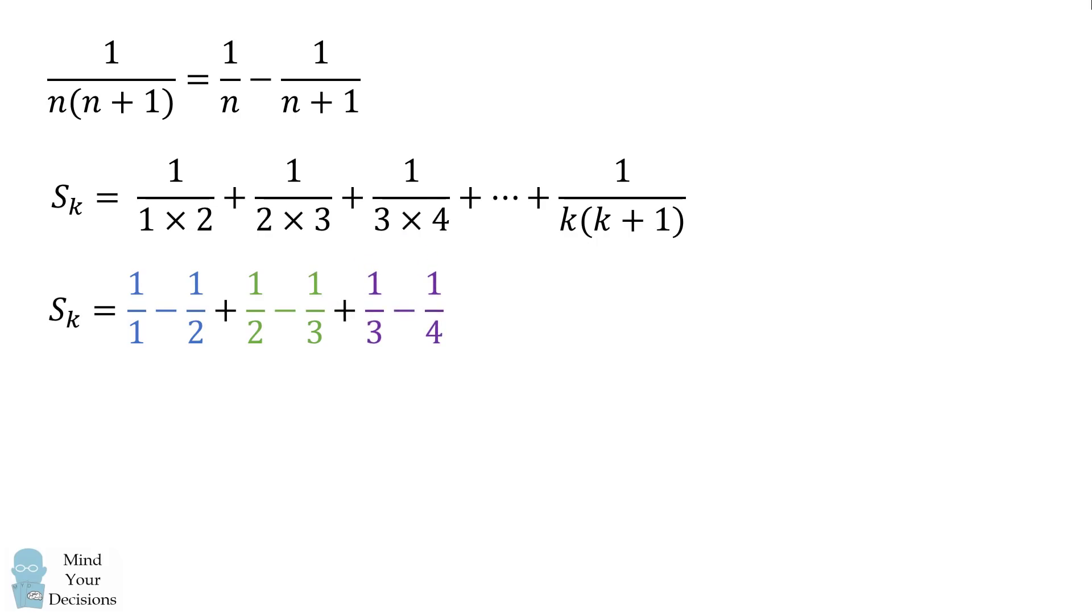Now we can continue applying this formula to the rest of the terms in this series. So now we can see a very magical cancellation happens. Here we have negative 1 half and then positive 1 half. Those terms will cancel out. We then have negative 1 third and a positive 1 third. Those terms will cancel out.